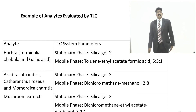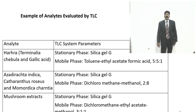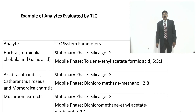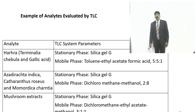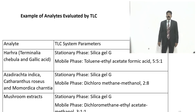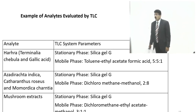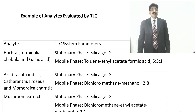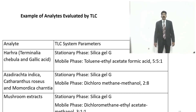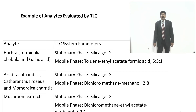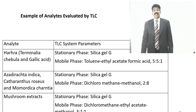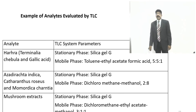An example for analysis evaluated by TLC: Terminalia chebula with gallic acid — the stationary phase is silica gel, mobile phase toluene:ethyl acetate:formic acid in ratio 5:5:1. Azadirachta indica, Catharanthus roseus (Vinca), and Momordica charantia — stationary phase silica gel G, mobile phase dichloromethane and methanol 2:8. Mushroom extracts — stationary phase silica gel G, mobile phase dichloromethane:ethyl acetate:methanol in ratio 3:1:1.